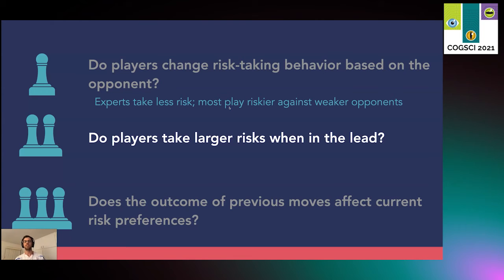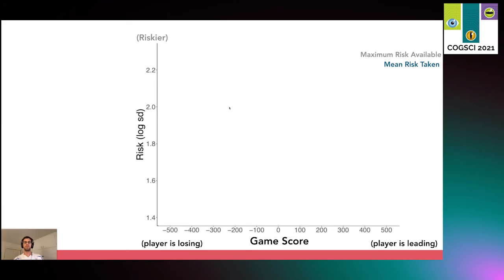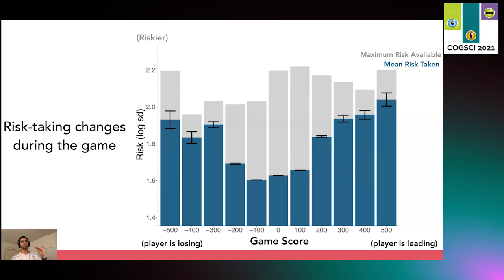Next, we ask whether players' risk tolerance changes as a function of the state of the game. In this plot, the x-axis represents the game score calculated in centipawns — plus 500 means a player is in a very strong advantageous position, and minus 500 means a player is losing very badly. We show the log risk on the y-axis, along with the average risk taken in blue and the maximum risk available for each move in gray. The gray bars are fairly stable, so the amount of risk available to a player is constant, but the actual average risk varies greatly — you see this U-shaped pattern.